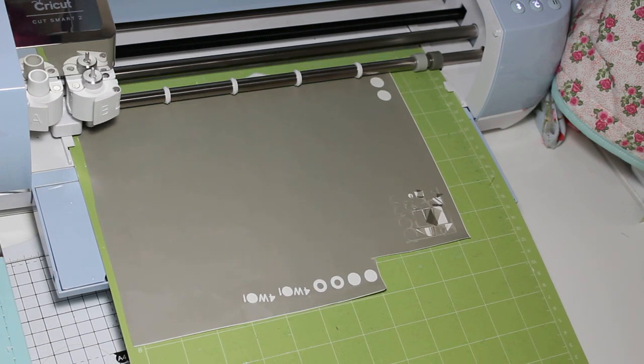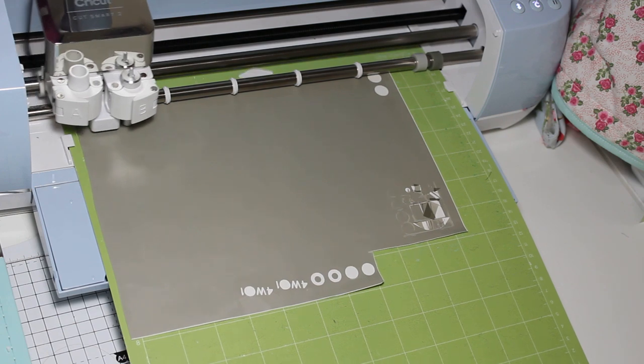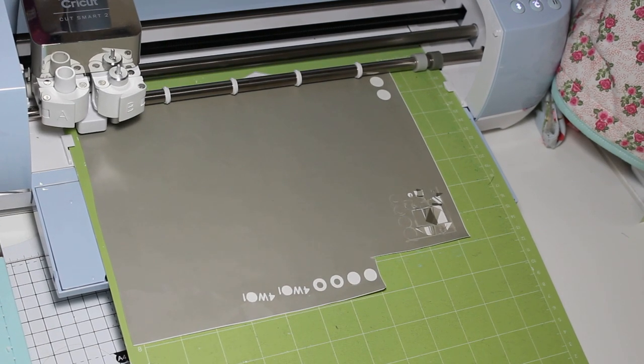This is it starting to cut the circles, which is easy, and then it will run through the numbers as well.